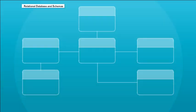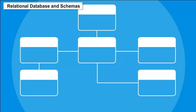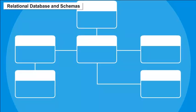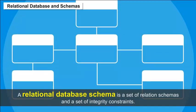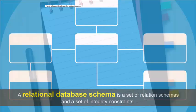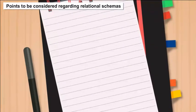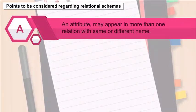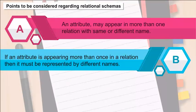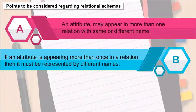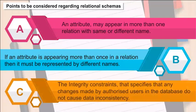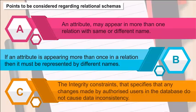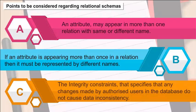RDBMS Schemas — Relational Database and Schemas. The term schema is an organization of data — how the database is constructed. A relational database schema is a set of relation schemas and a set of integrity constraints. Points to be considered: (A) An attribute may appear in more than one relation with the same or different name. (B) If an attribute appears more than once in a relation, it must be represented by different names. (C) Integrity constraints specify that any changes made by authorized users do not cause data inconsistency.